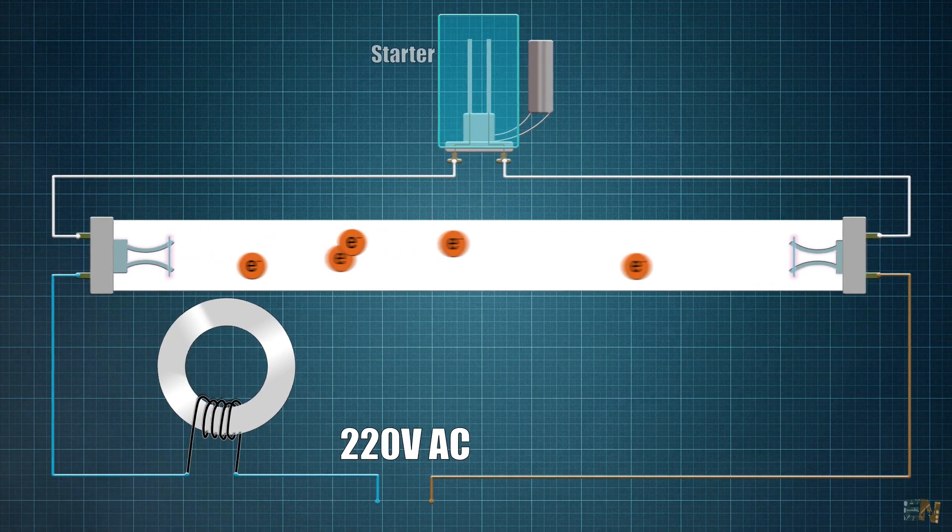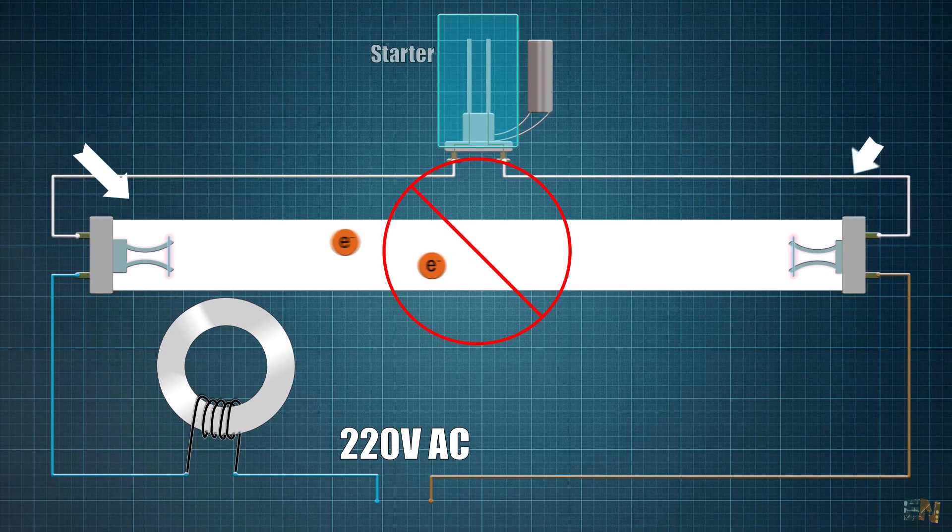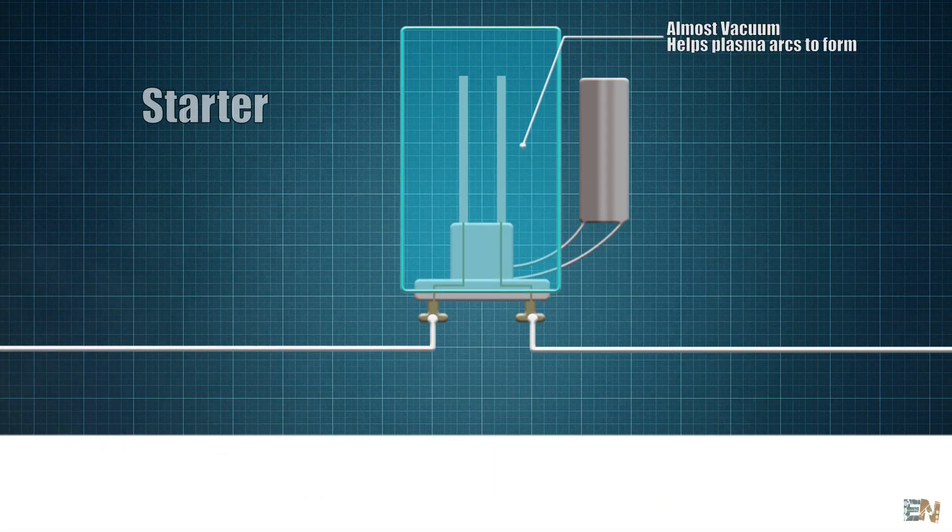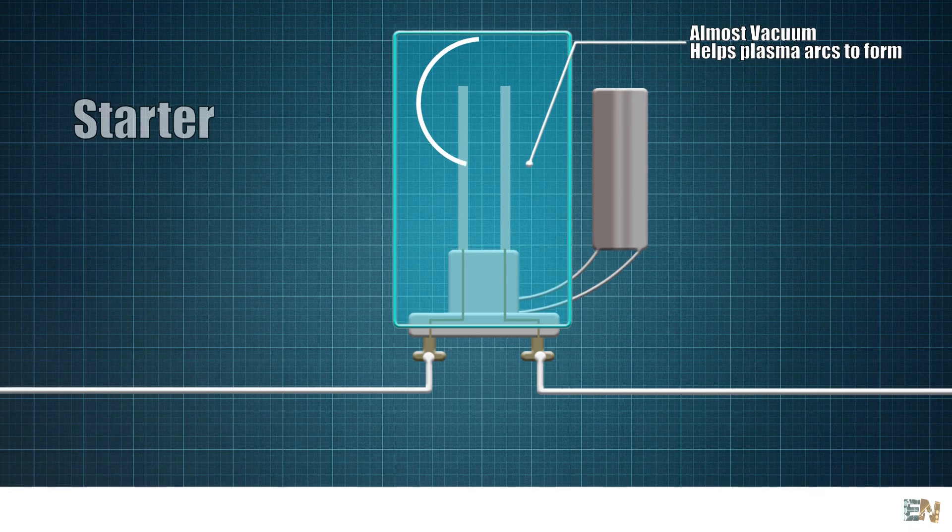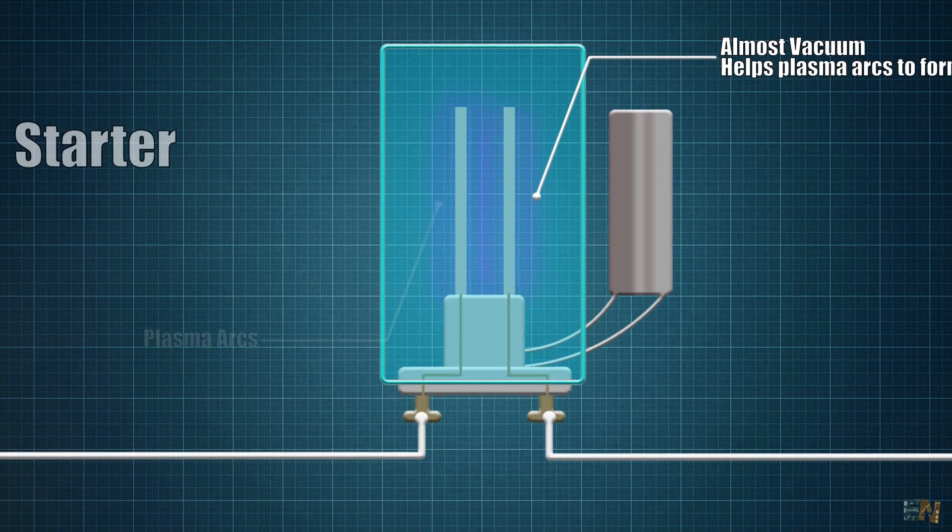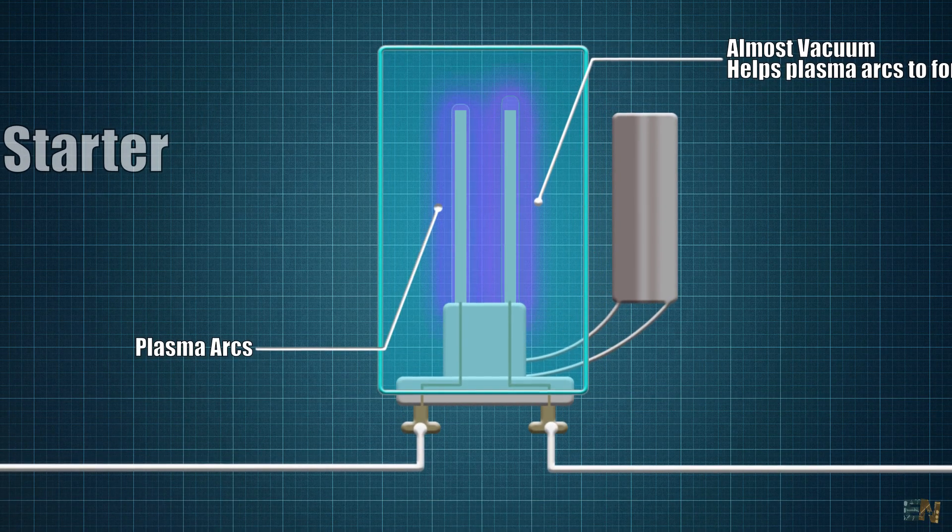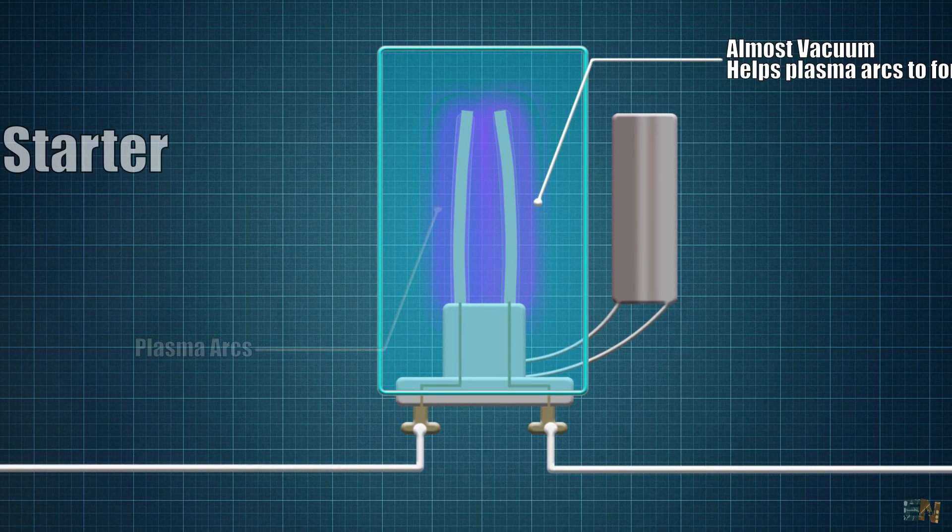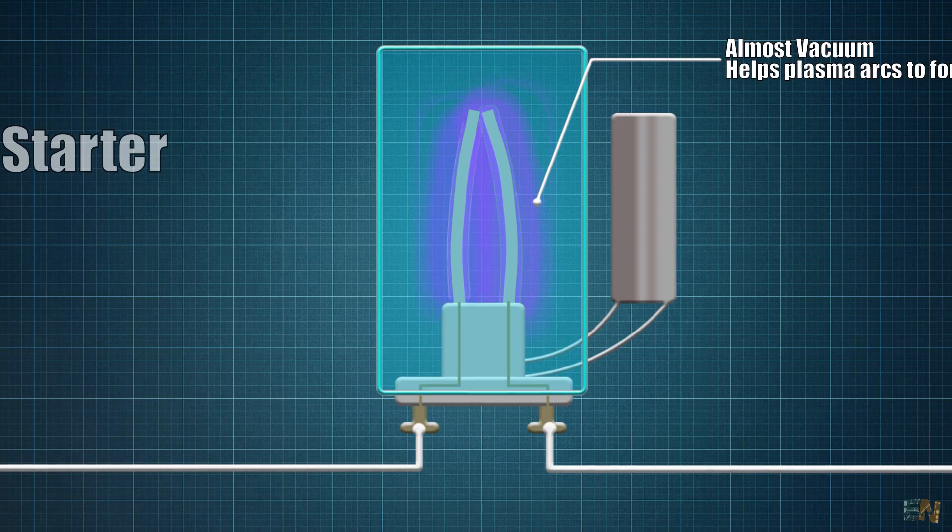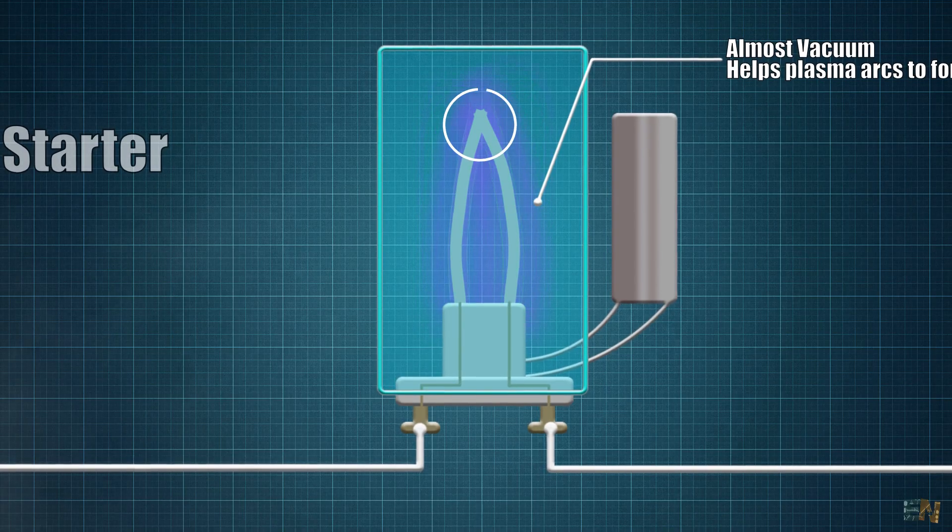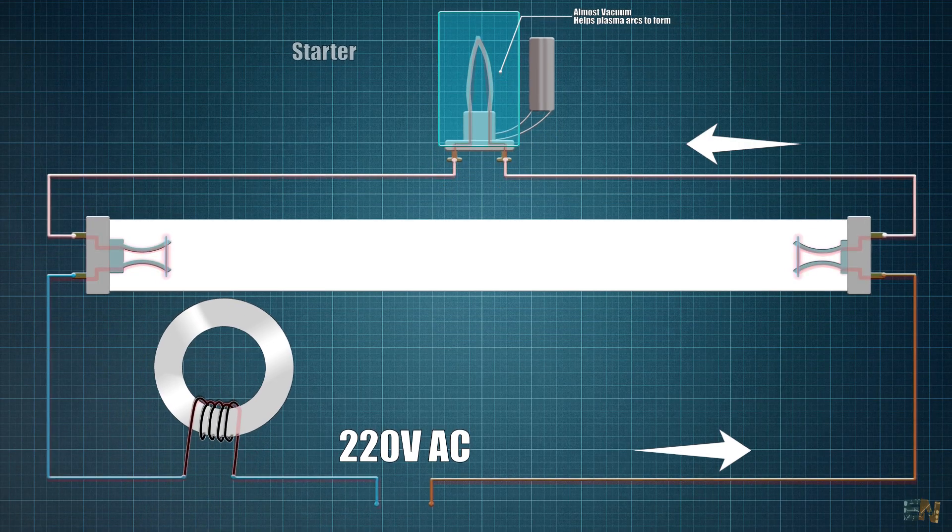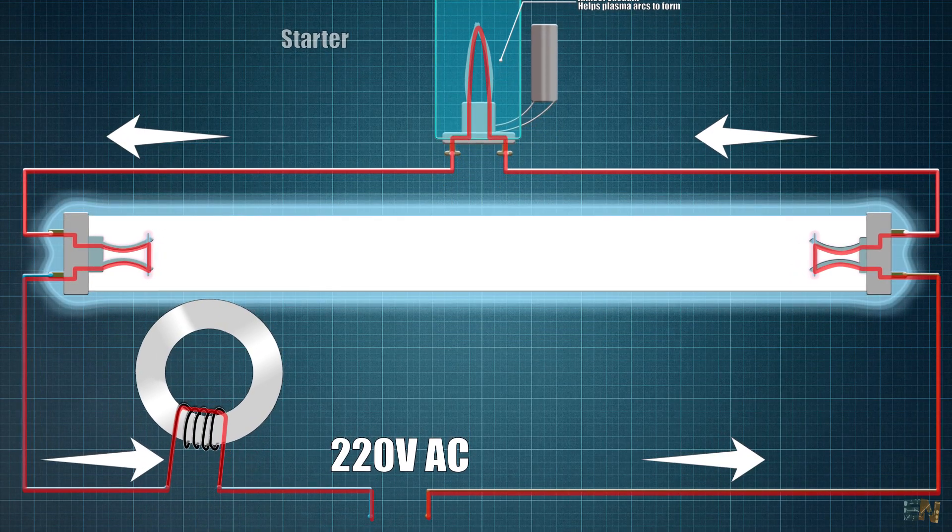As you can see at this moment, the electrons can't flow from here to here in order to make the mercury radiate UV. But inside of the starter we also have vacuum and the metal contacts are close enough for the 220V to create an electrical plasma arc. This plasma arc will hit the connectors just enough to change their shape and connect them one to each other. So that will now close the circuit and a lot of current will flow from one side to the other. That's how the tube will turn on.